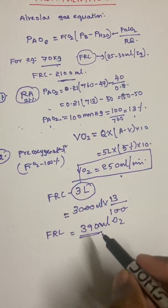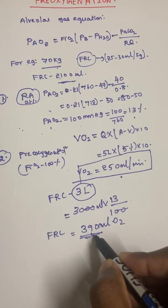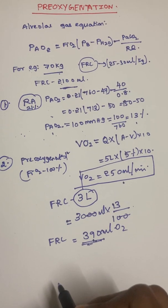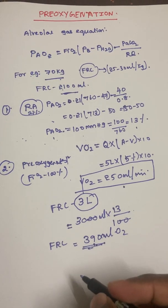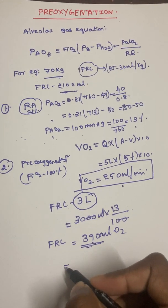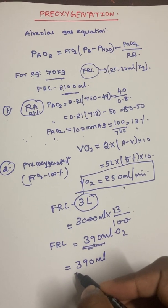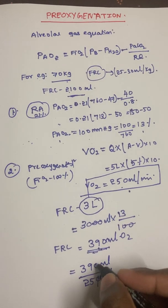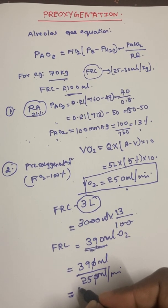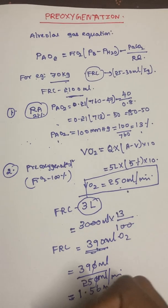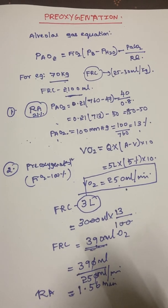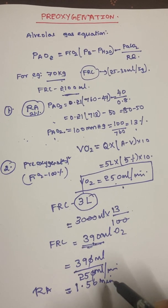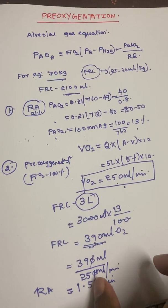VO2 is 250 ml per minute. With 390 ml of O2 available in the FRC on room air, dividing 390 by 250 gives approximately 1.56 minutes. So if this patient is induced without pre-oxygenation on room air, they can only withstand hypoxia for about 1.56 minutes before starting to desaturate.